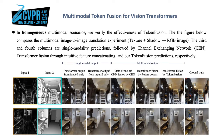In homogeneous multimodal scenarios, we verify the effectiveness of token fusion. The figure below compares the multimodal image-to-image translation experiment — for example, from texture and shadow to RGB image. The third and fourth columns are single modality predictions, followed by channel exchanging network, transformer fusion through intuitive feature concatenating, and our token fusion predictions, respectively.